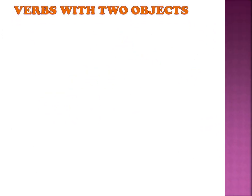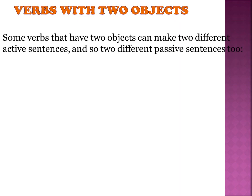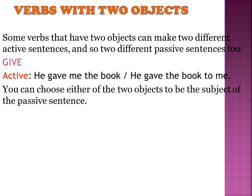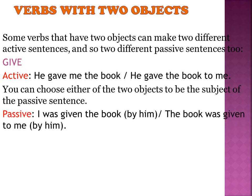Now let's look at verbs with two objects. Some verbs that have two objects can make two different passive sentences. For example, with 'give': active 'He gave me the book' or 'He gave the book to me.' You can choose either object as the subject of the passive sentence: 'I was given the book by him' or 'The book was given to me by him' — you choose what or who you want to focus on.